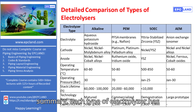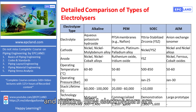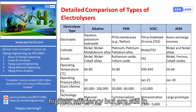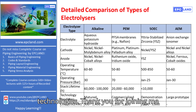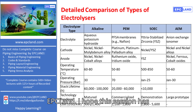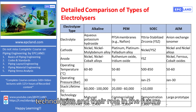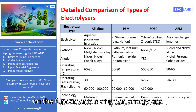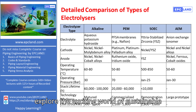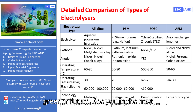In summary, each type of electrolyzer has its own unique advantages and challenges. Alkaline electrolyzers are cost-effective and mature; PEM electrolyzers are efficient and responsive to renewable energy; SOEC electrolyzers offer the highest efficiency but are still in development; and AEM electrolyzers represent the latest advancements, combining the best features of other technologies. Thank you for joining me today in this educational series by EPC Land. I hope this session has provided you with a clear understanding of the different electrolyzer technologies and their role in the future of green energy. Don't forget to subscribe to our channel for more videos on the fundamentals of green energy. Together, we can drive the transition to a cleaner, greener future. See you in the next video!